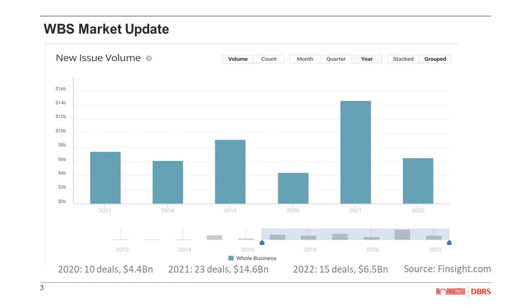Some structural features are tied to system-wide sales or other measures of profitability, or breaches of certain covenants. Rapid amortization events usually result in diverting all proceeds to fully pay down the notes. There are also covenants and other limitations on non-securitized debt the company may incur. Our ratings address timely payment of interest and ultimate payment of principal by the legal final maturity. We do not rate to the anticipated repayment date, nor to the typically subordinated step-up interest associated with a missed anticipated repayment date.